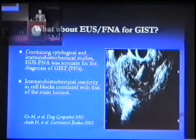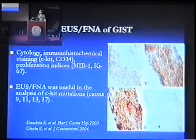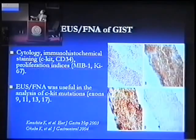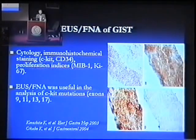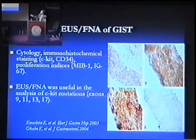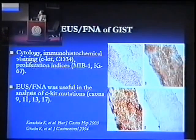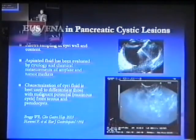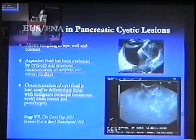If you put a needle in it, specifically using the true-cut needles that are large, not only can you provide a sample, but you can perform immunohistochemical staining that would be very accurate and comparable to surgical specimens — determining c-KIT, CD34 staining, and even proliferation indices like MIB1 and KI67. To differentiate these lesions, you might need to aspirate the sample and send it for cytology and chemical measurements, including amylase and tumor markers.